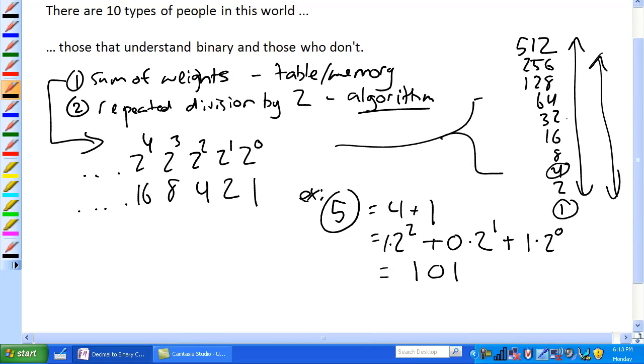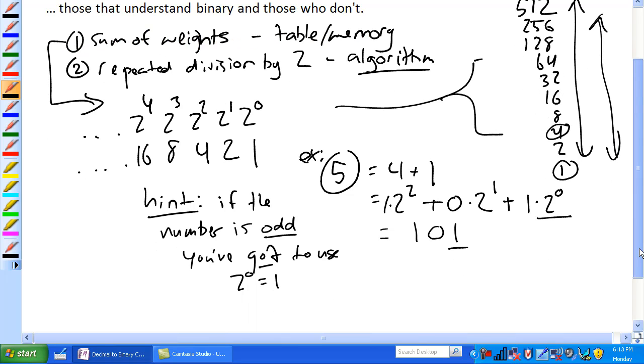It's making use of this table right here that add up to that decimal number. And again, there's a super easy hint. If the number is odd, the decimal number you're interested in, you've got to use 2^0 equals 1. Any time it's odd, you're always going to have this here. That makes sense. Five is an odd number. You're going to see this 2^0 power and you're going to see that 1 at the end.